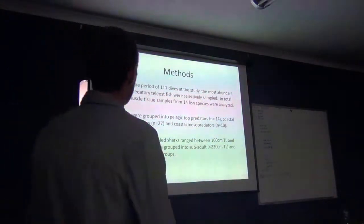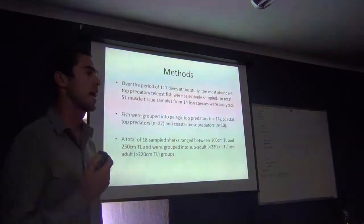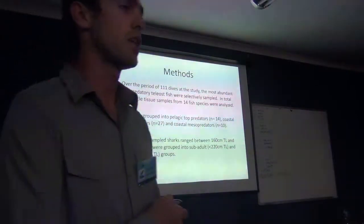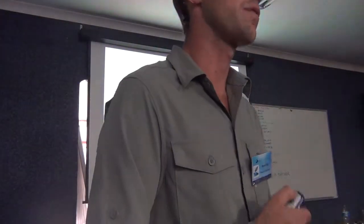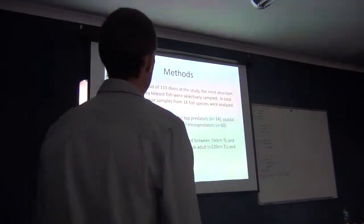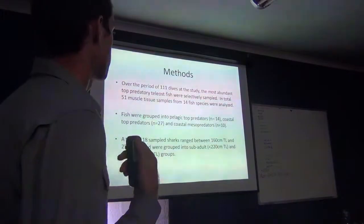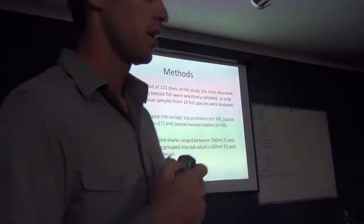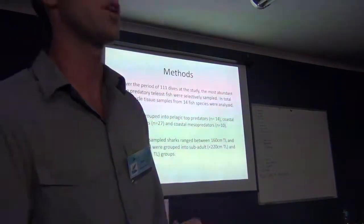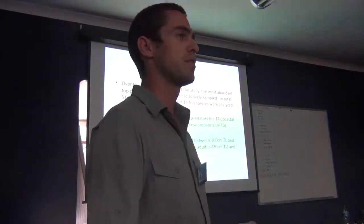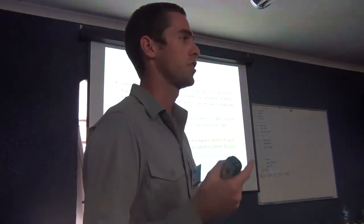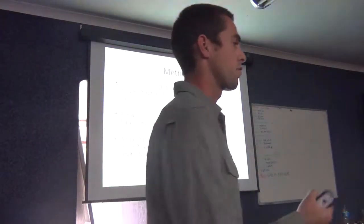Over the period of about 111 dives at the study sites, we assessed the most abundant predatory teleost fish species and collected samples from those species selectively. These top predatory pelagic teleost species were then grouped into two main categories: one being the offshore component — pelagic teleost predatory fish such as wahoo, dorado, sailfish, and others that typically forage offshore.